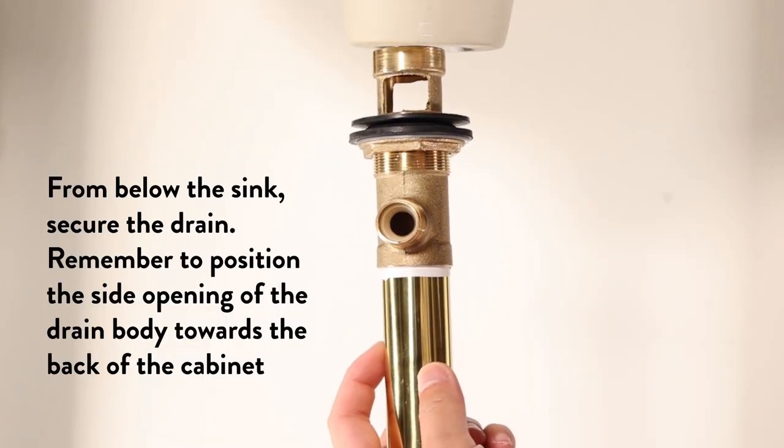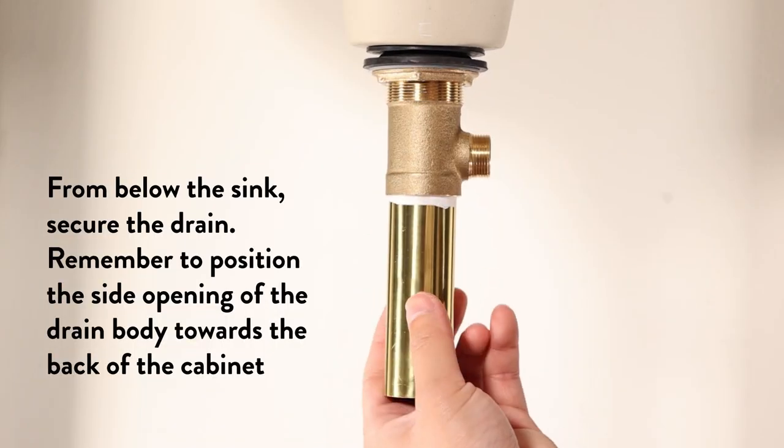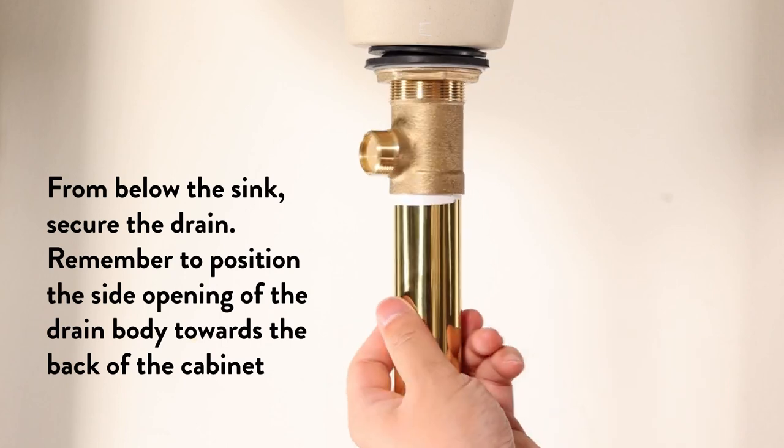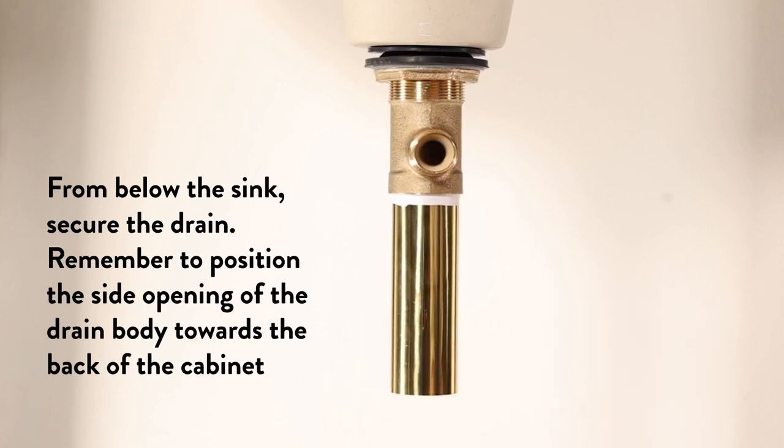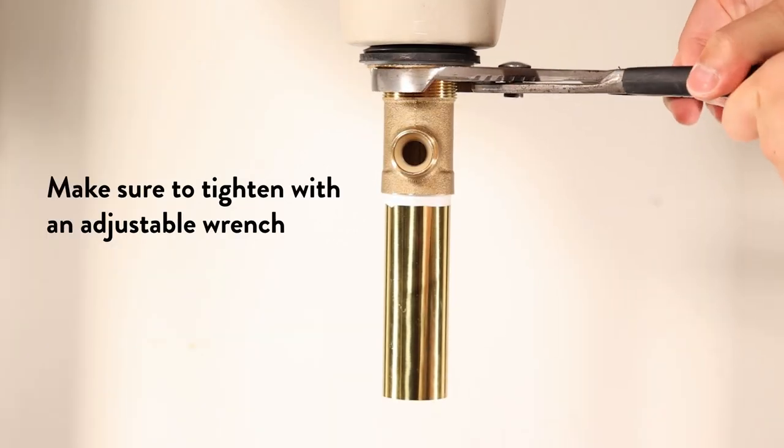From below the sink, secure the drain. Remember to position the side opening of the drain body towards the back of the cabinet. Make sure to tighten with an adjustable wrench.